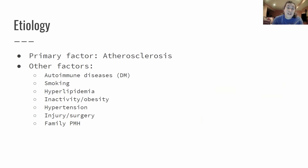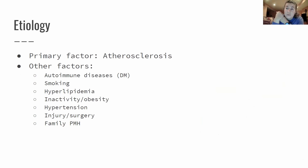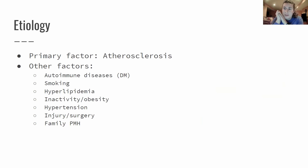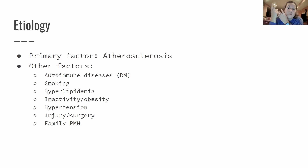The primary factor is atherosclerosis - that narrowing, the fatty plaque buildup - that's the big thing going on. Many other factors can contribute to atherosclerosis forming or be another reason why someone might develop peripheral vascular disease. The first one is probably any sort of autoimmune disease. Type 2 diabetes falls right in there with issues with circulation. Smoking is another one - circulation is decreased due to restriction in the blood vessels, making them more likely to have claudication and other things involving restricted blood flow.